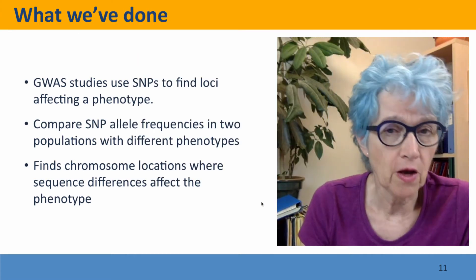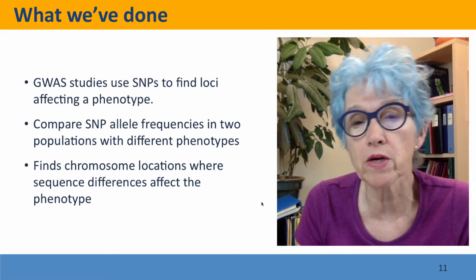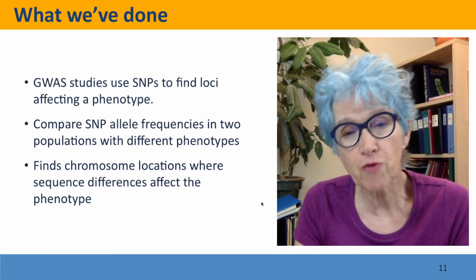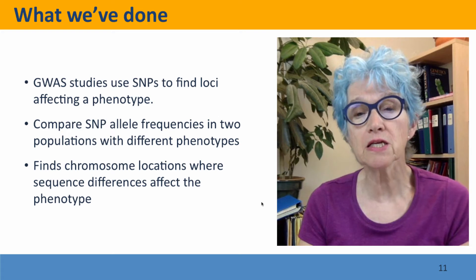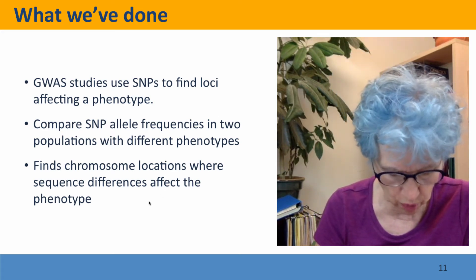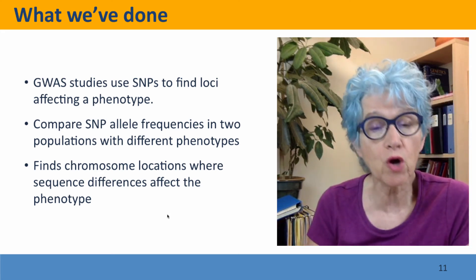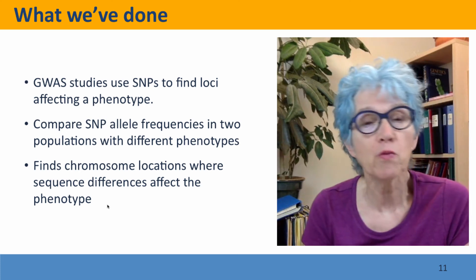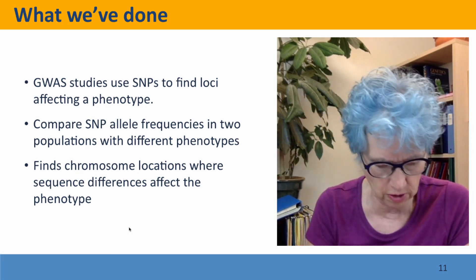So what we've done: we've talked about how you can use genome-wide association studies of SNPs to find the loci that affect a phenotype. We're finding places in the genome — locations on the chromosome — where sequence differences affect the phenotype. We're not necessarily finding the causal sequence differences; we're just finding the place where we would look for the causal sequence differences.